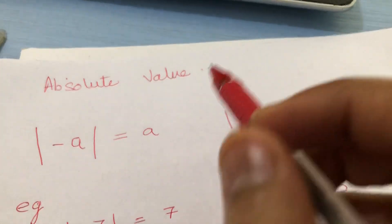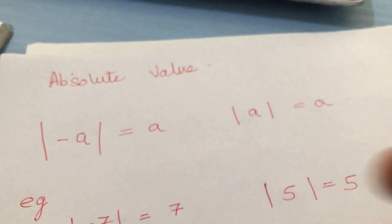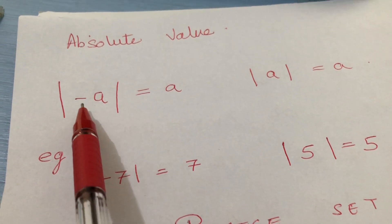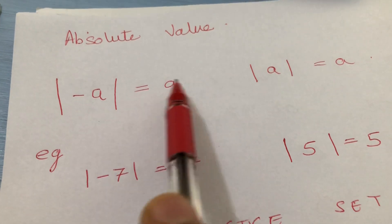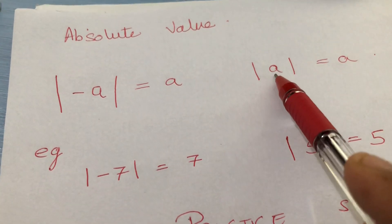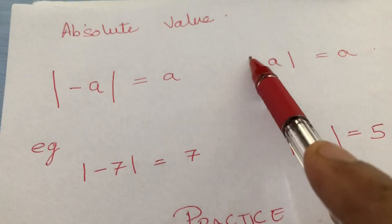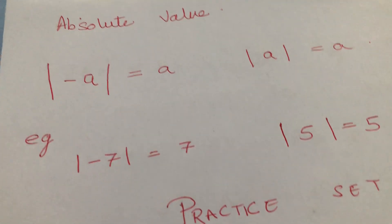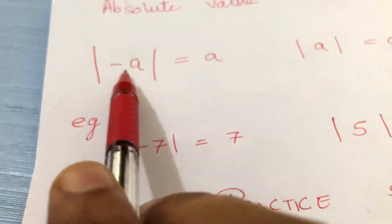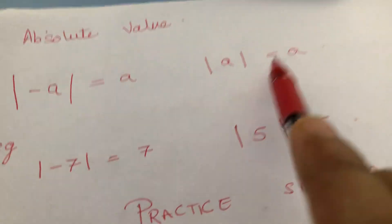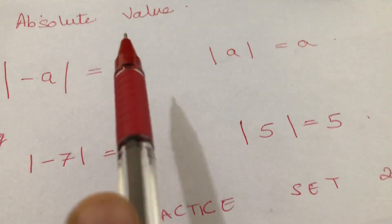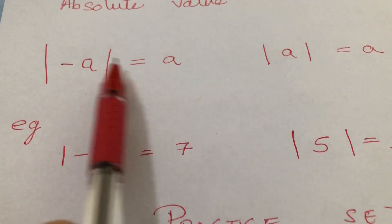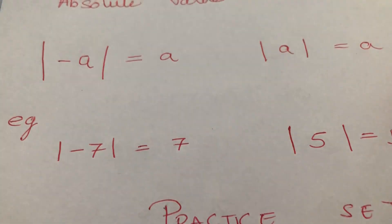Hello friends, today we will be studying about absolute value. Absolute value means we ignore the sign of a number — absolute value of minus a is a, and absolute value of a is also a. This sign is known as the mod sign or the modulus sign. So mod of minus a is a, and mod of a is also a. Basically, we don't focus on the sign; we only focus on the value.